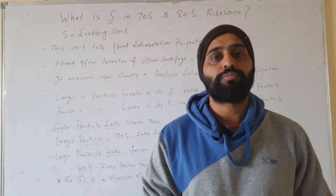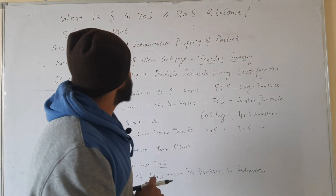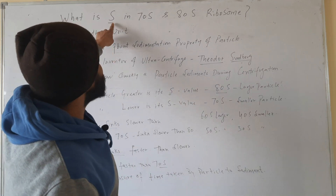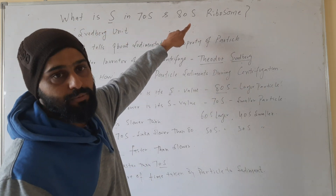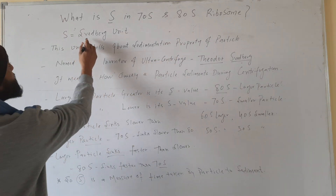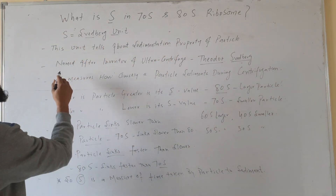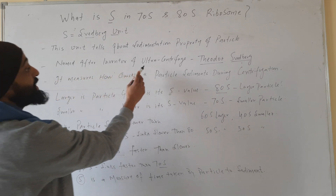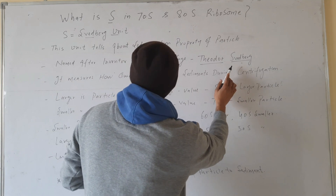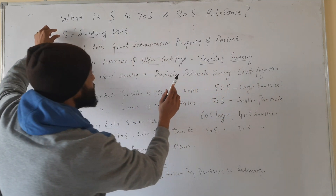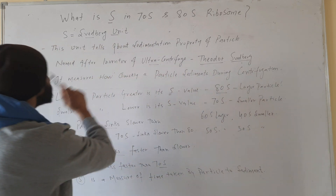Hello friends, welcome to my YouTube channel Dr. Sam's Biology. In this video we will discuss about this 'S' — what is this S in 70S and 80S ribosomes? This S is the Svedberg unit, and this unit is named after the inventor of the ultracentrifuge, Theodore Svedberg. So this unit is given the name of Theodore Svedberg.